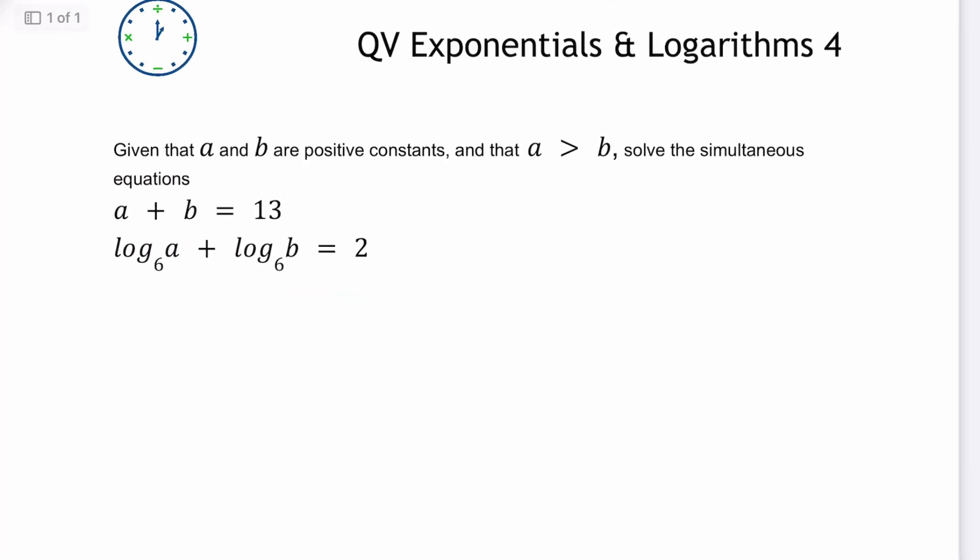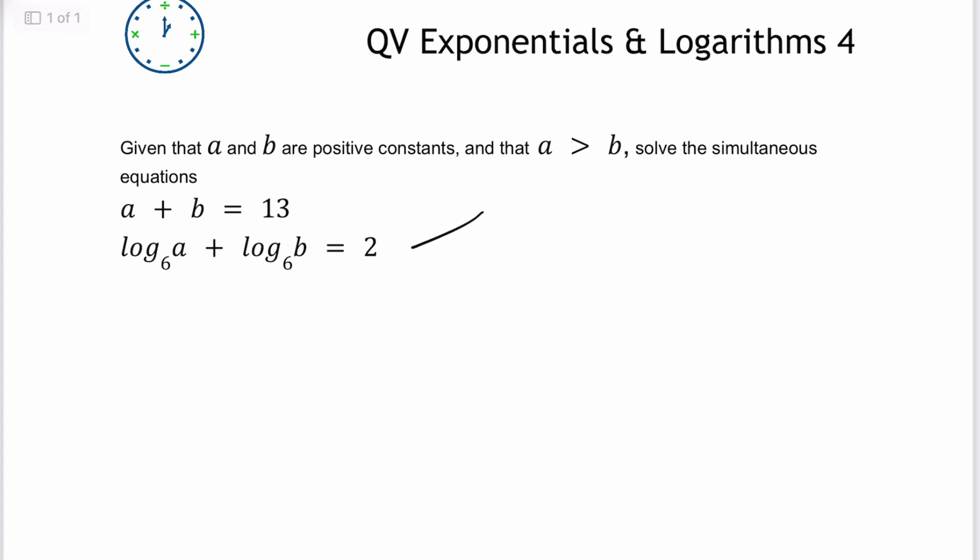So I'm going to have a look first at equation number 2 because I can actually rearrange that as log of a multiplied by b to base 6 and that's going to equal 2. From there, I can change that then to the exponential form. In other words, I can get rid of the log base 6 and I'm going to call that ab equals 6 squared which basically means that ab equals 36.